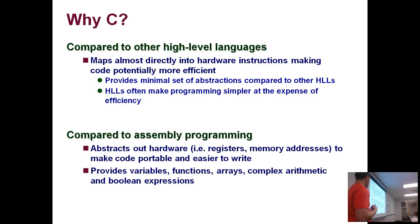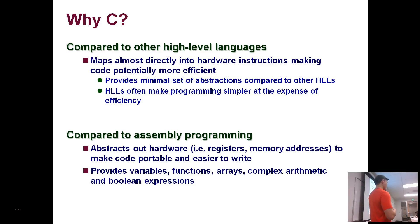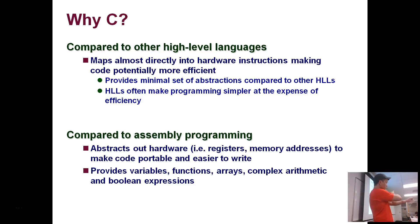C abstracts the hardware just enough to make it easy to program. For example, you don't access hardware registers directly, but you can access memory addresses — you have an abstraction for manipulating those addresses. It also provides variables, functions, arrays, and arithmetic and boolean expressions, giving you minimal abstractions on top of hardware features compared to other programming languages.